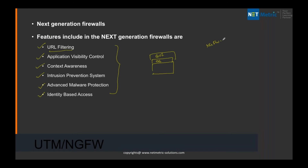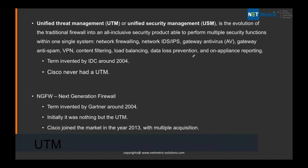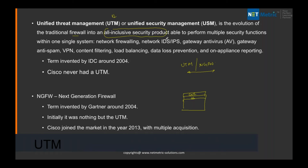What is UTM then? UTM and next-generation firewall — there are slight differences, but more or less they are the same. These are two different naming conventions given by different analytical report companies. UTM stands for Unified Threat Management, also called USM — Unified Security Management. It's the evolution of the traditional firewall. All-inclusive security products are able to perform multiple security functions in one single system: network filtering, IPS, IDS, gateway antivirus, gateway anti-spam, VPN, content filtering, load balancing, DLP, and online appliance reporting.